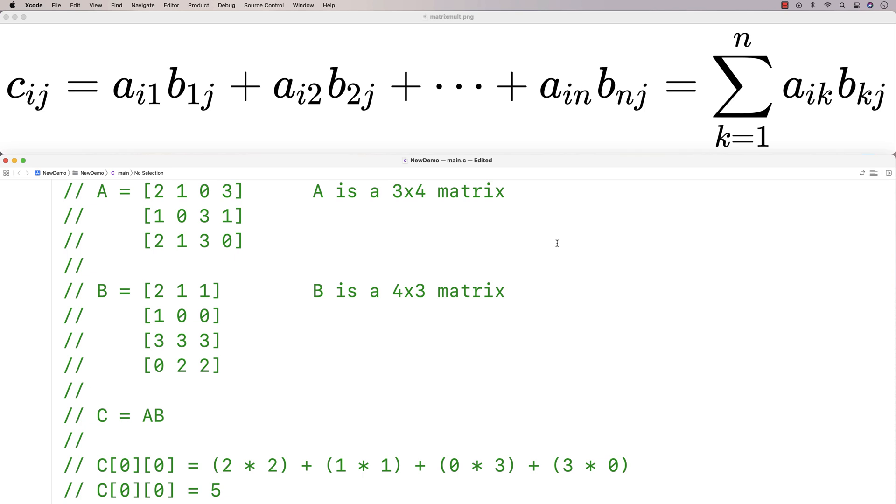The algorithm produces the matrix C by multiplying and adding together the elements of A and B in a specific way. The matrix multiplication algorithm is defined in this equation above, but it can be a little tricky to interpret.